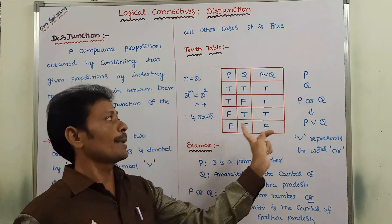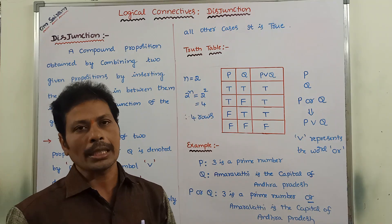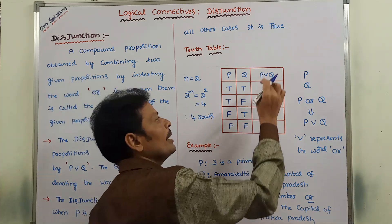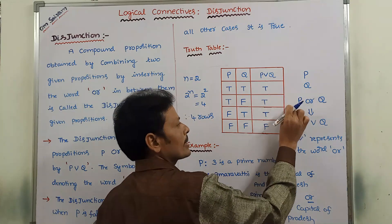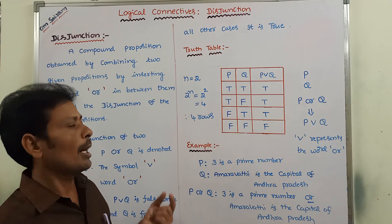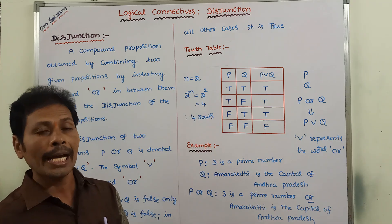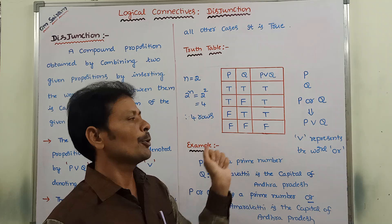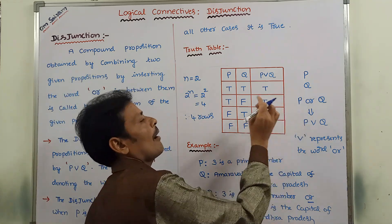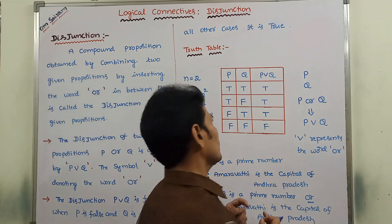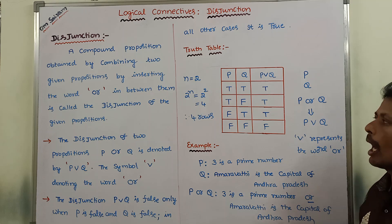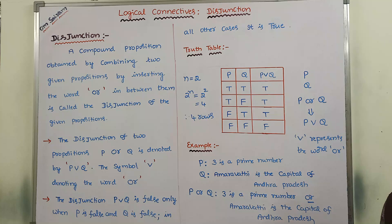To remember the truth table of the Disjunction connective: P OR Q is false only when both P and Q are false. In the remaining three cases, P OR Q is true. Using this single rule, we can write the entire truth table. The points discussed so far can be noted down. I hope all of you are understanding this video.